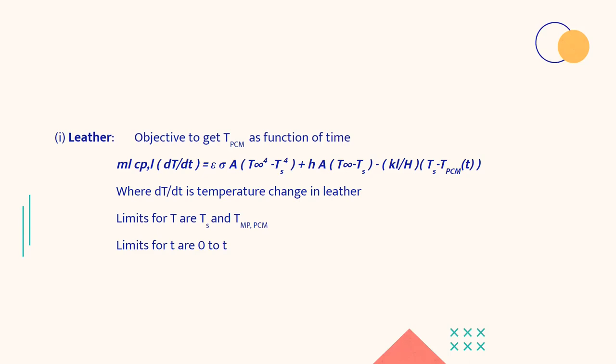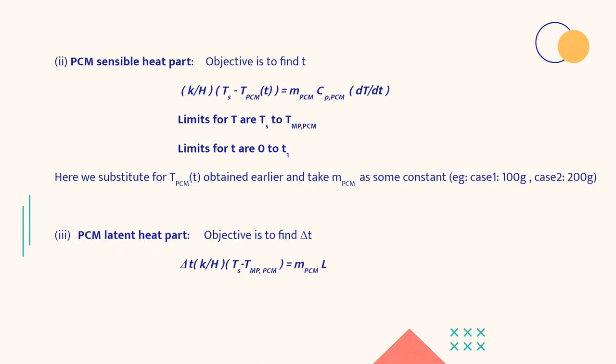So then we have considered the energy balance equation and the limits for temperature we have kept as the surface to the melting point of PCM, because we have taken the assumption that initially the temperature of the surface and the temperature of PCM is same. That's why we can take into account T surface and we have inserted the limits for time as zero to t.